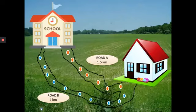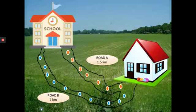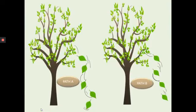Just think about this situation. Kavita can reach her school in two ways as shown in the picture. Can you tell which path she could reach school by earlier? Here is another example: in the picture you can see a leaf falling from a tree. Which path will the leaf reach the ground first?